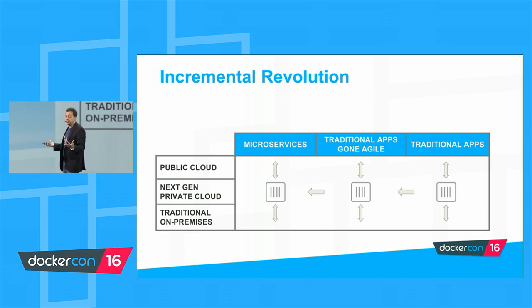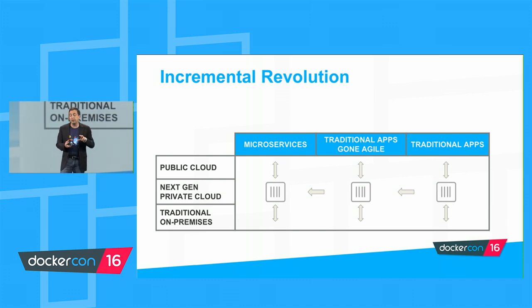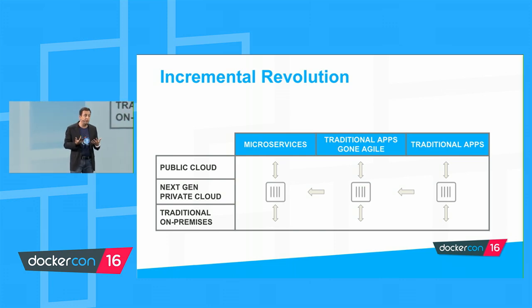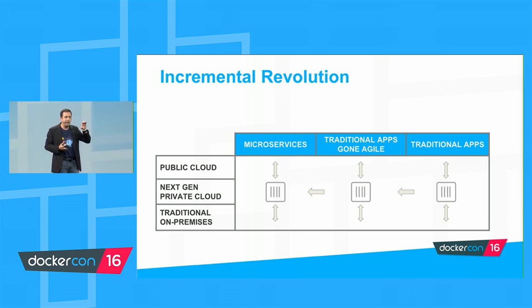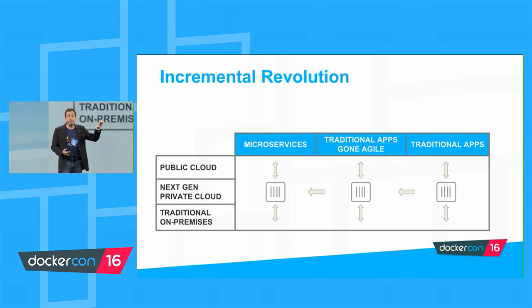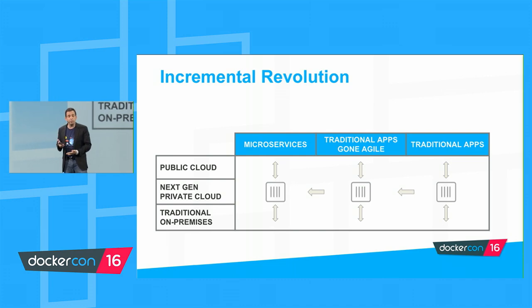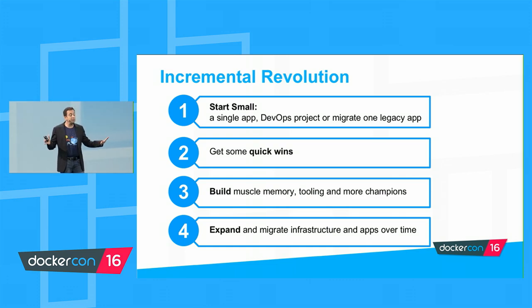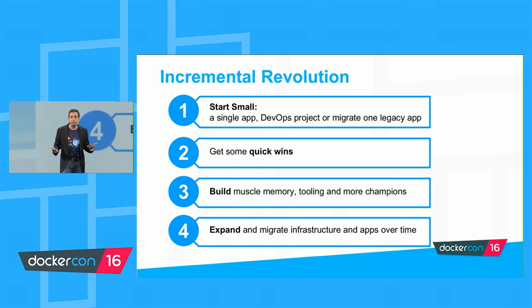A frequent pattern is that after Dockerizing an entire application, you take a three-tier application and Dockerize each tier. Once people have experience Dockerizing traditional apps, they start noticing that multiple applications share a session manager or authentication layer, and experiment with pulling each out as its own container or application bundle. The result is a smooth path from traditional applications to more agile ones, and from traditional infrastructure to more modern infrastructure. Start small, get quick wins, build muscle memory, then expand.